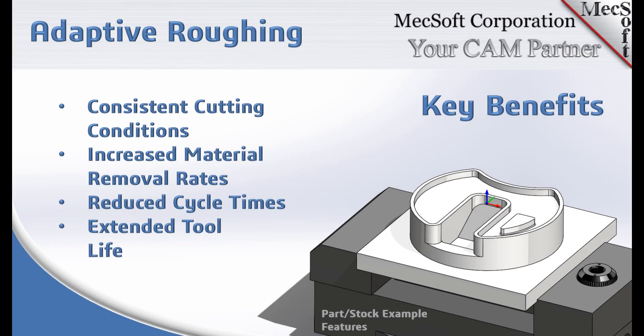Hello everyone and welcome to 3-Axis Adaptive Roughing from Mechsoft Corporation. Adaptive Roughing is an advanced 3-Axis Z-Level Roughing toolpath strategy that is available for each of Mechsoft's CAM plugins, including VisualCAD CAM, RhinoCam, and VisualCAM for SolidWorks.